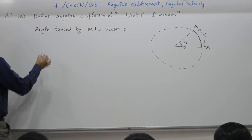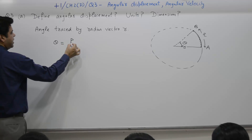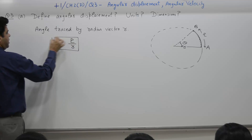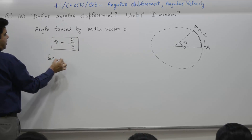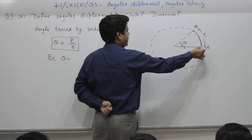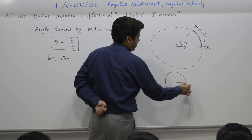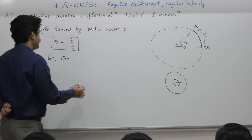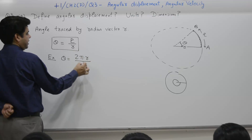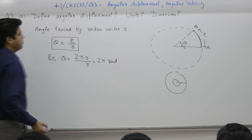The angle is defined as the ratio of arc length to radius. For example, if a particle completes a full circle starting from A and ending back at A, the distance covered is 2πR and the radius is R, so the angle turned is 2π radians.